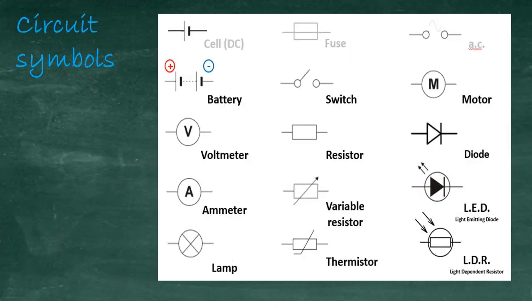Universally, symbols are used to represent the components of a circuit, and the ones on this page are the ones you're expected to know: battery, voltmeter, ammeter, lamp, etc.